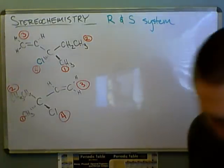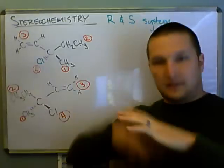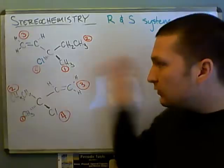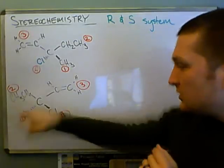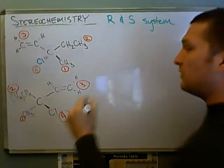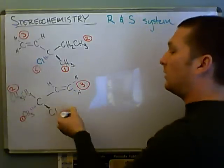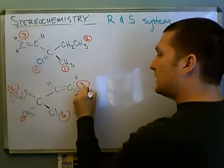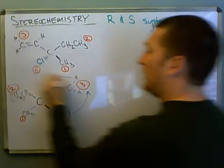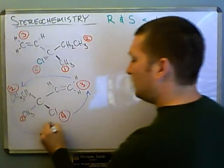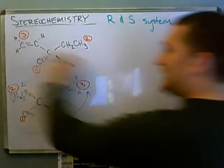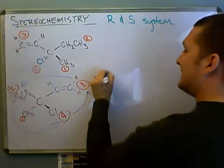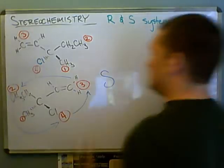So, now we can move on. We've done step three in the overall determining if this is R or S. We've rotated it so that the lowest is pointing away from us. And now we can see whether this goes clockwise or counter-clockwise. Well, we start with the highest number and then move towards the next number and then the next number and then back. So, I see that this is a counter-clockwise motion right here. So, since it's counter-clockwise, it's S for sinister or left-handed.